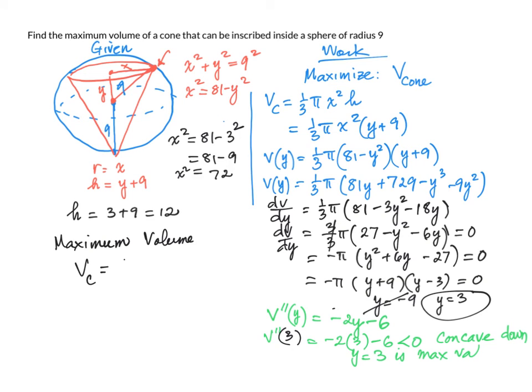So maximum volume of a cone that can be inscribed inside the sphere: Vc equals 1 third pi x squared times height. And we have 1 third pi, x squared is 72, our height is 12. So the maximum volume is 288 pi cubic units.